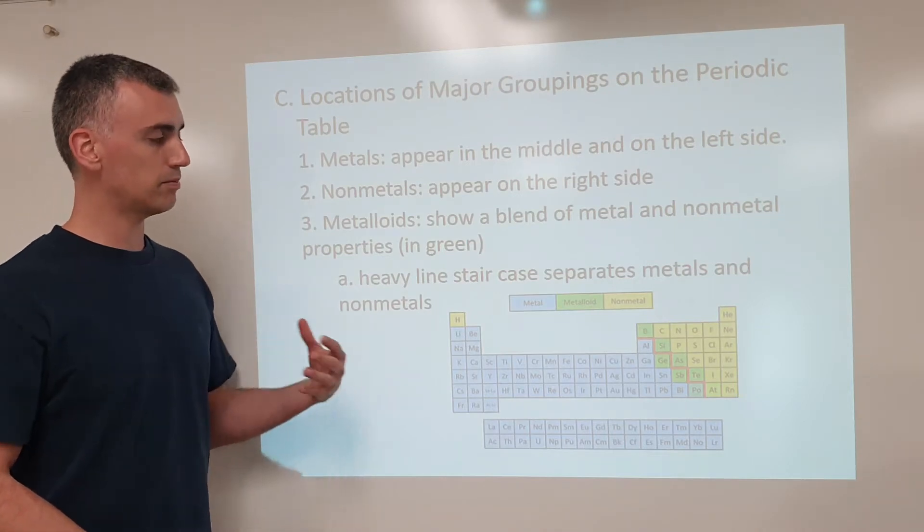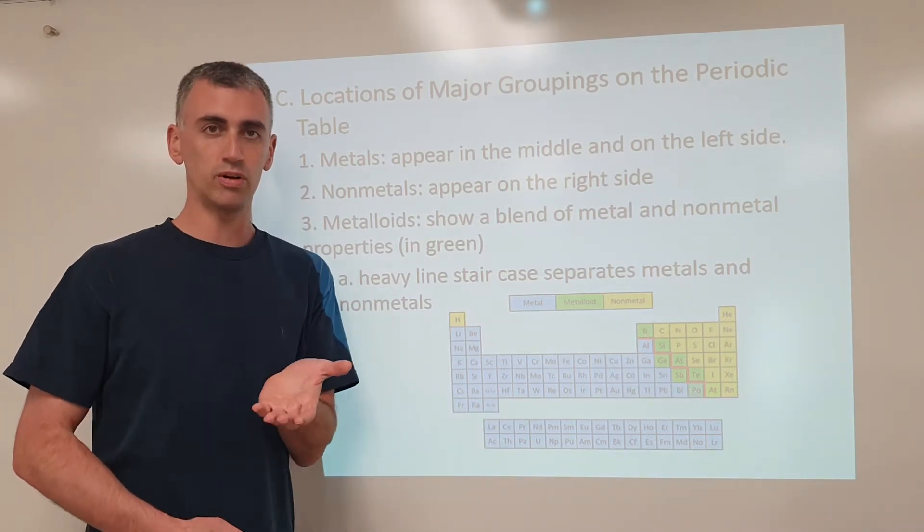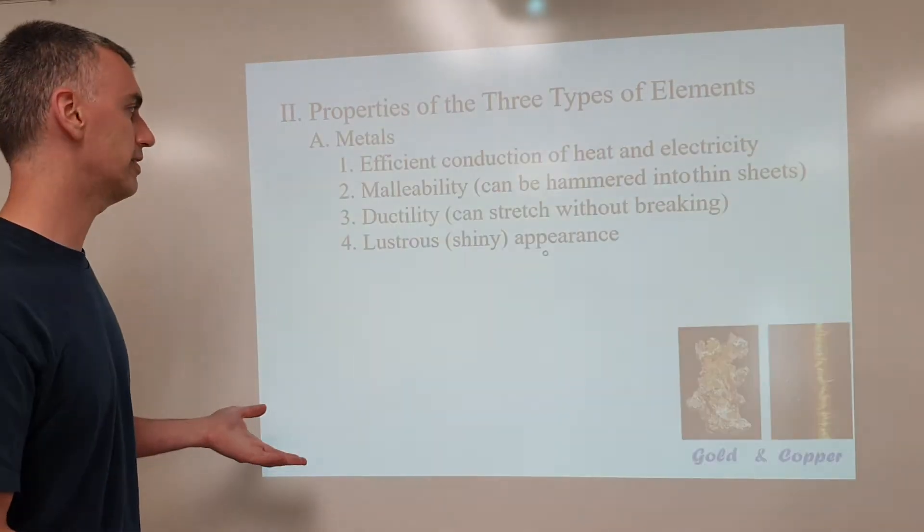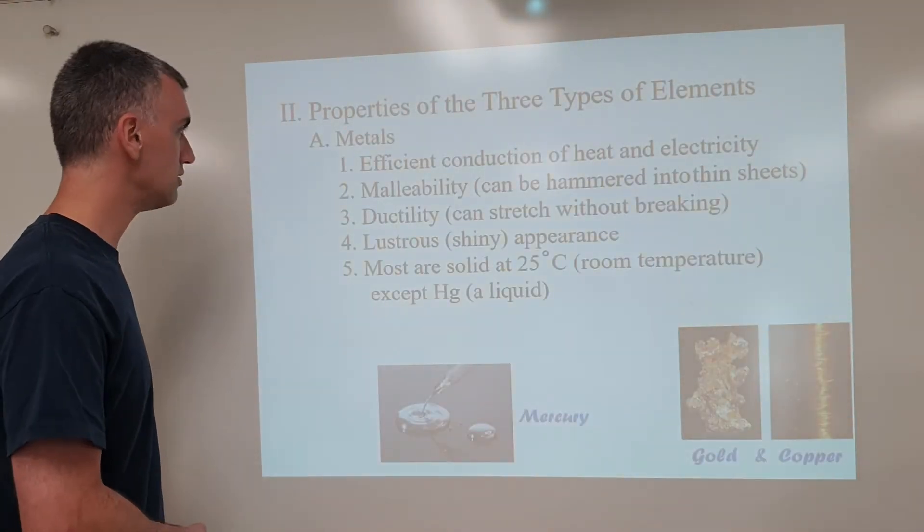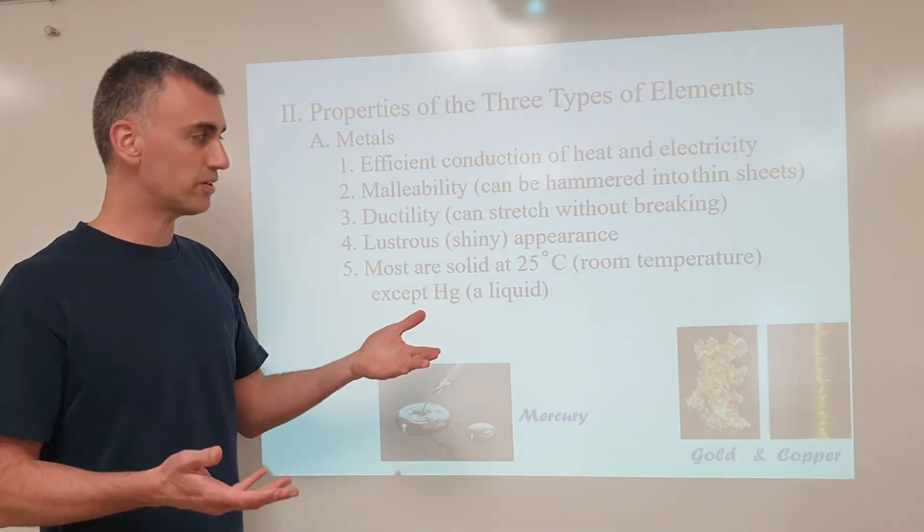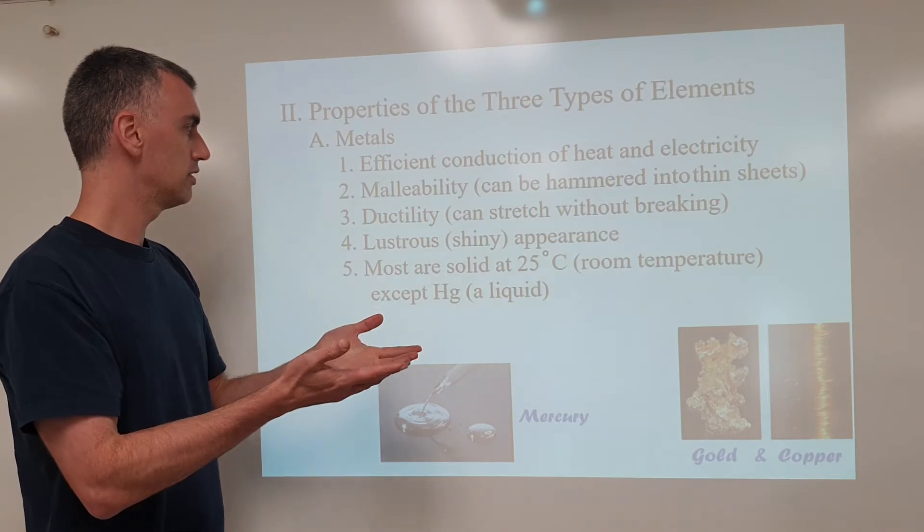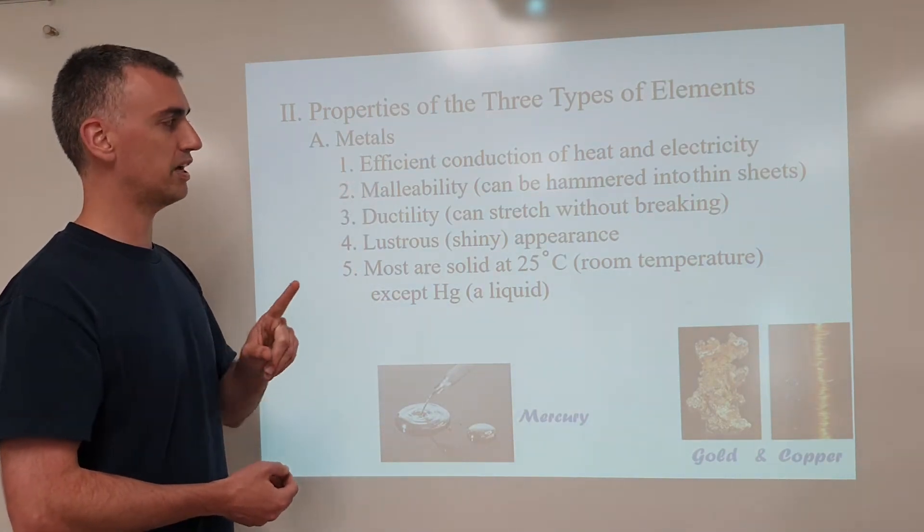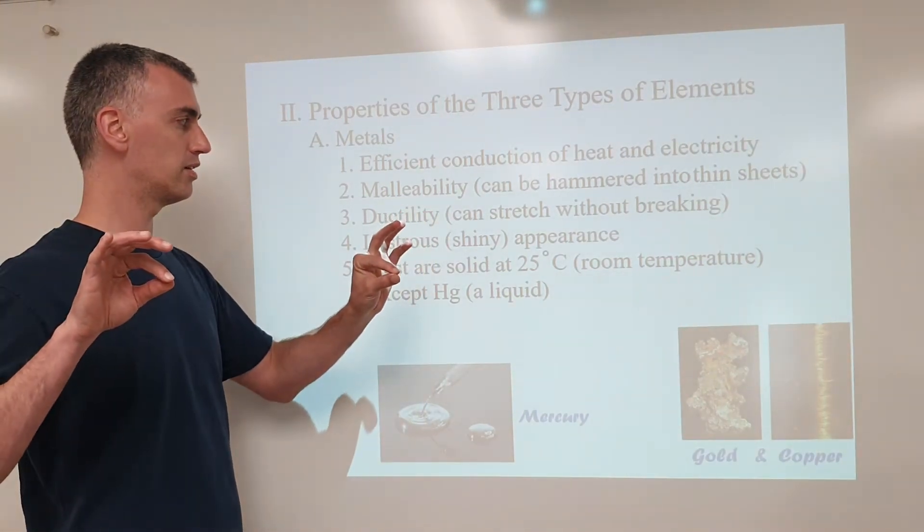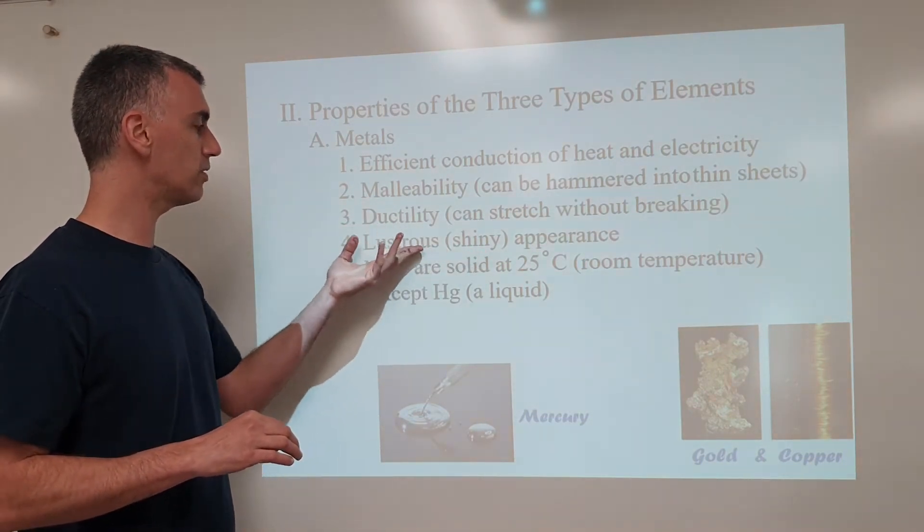When we look at metals versus non-metals there's certain properties that we see. We all know metal conducts electricity but there are certain things about metal that we need to describe using academic vocabulary. So metals conduct heat and electricity. The fact that you can bend metal without it breaking is called malleability. Or ductility, you can stretch it into ever thinner wires without breaking it. Or the fact that it's shiny, we call that lustrous.